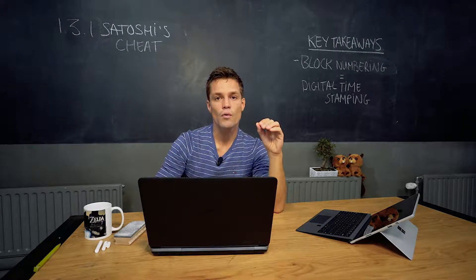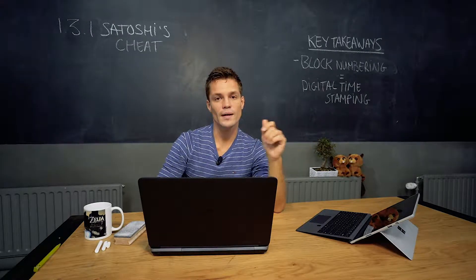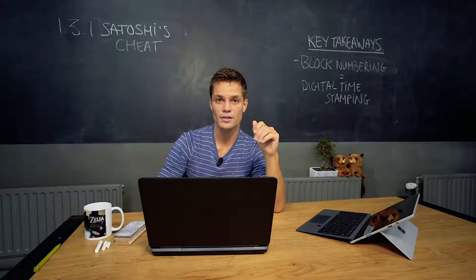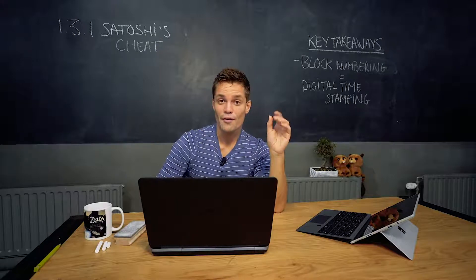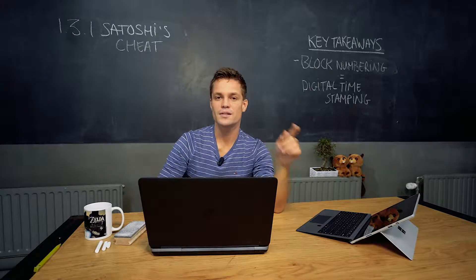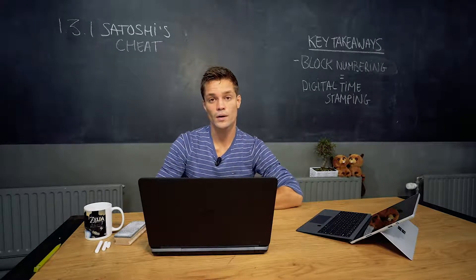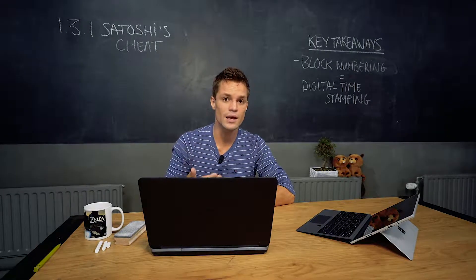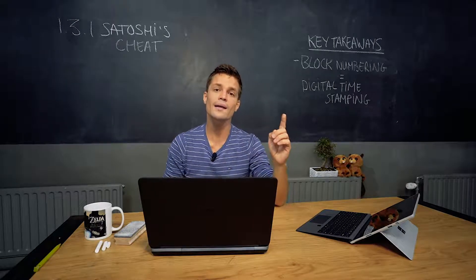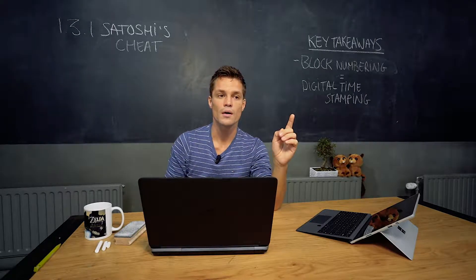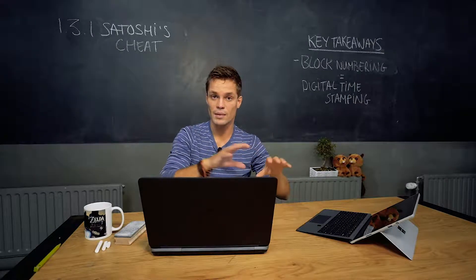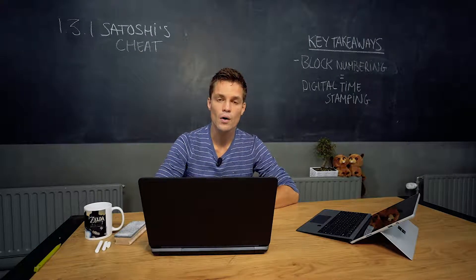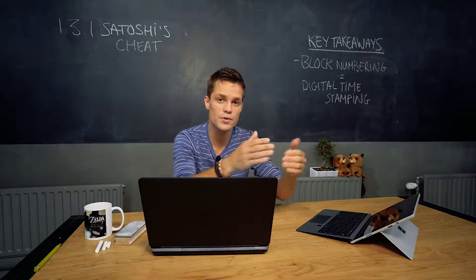So Satoshi didn't fully solve the Byzantine general problem. If somebody transfers me 10,000 bitcoin — and on 22 May 2010, 10,000 bitcoin was once paid for two pizzas — I don't know whether I actually received them. I need to wait at least 10 minutes to see if the unconfirmed transaction is confirmed in the first block, and even then I'm not entirely sure that block will last — is it a purple block or is it in the main chain? It's very impractical for buying a pizza.